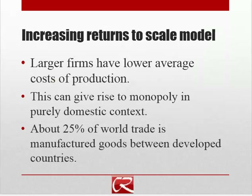When you look at world trade, a lot of it — about 25% — is between rich countries trading manufactured goods with each other. Essentially, much of what happens is trade between countries, or even between US states, because firms just happen to be located somewhere. One set of firms might locate in Wisconsin and another in Minnesota, and they send their products across each other's borders.